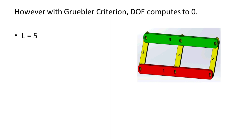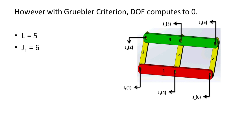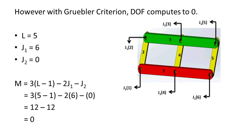The extended mechanism has 5 links and 6 joints with one degree of freedom, and no joints with two degrees of freedom, so J2 equals 0. By the Gruebler Criterion, the degree of freedom computes to 0, but the actual degree of freedom is 1. Therefore, the Gruebler Criterion is not applicable to this mechanism.